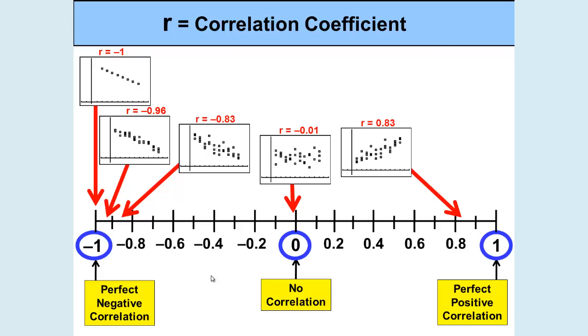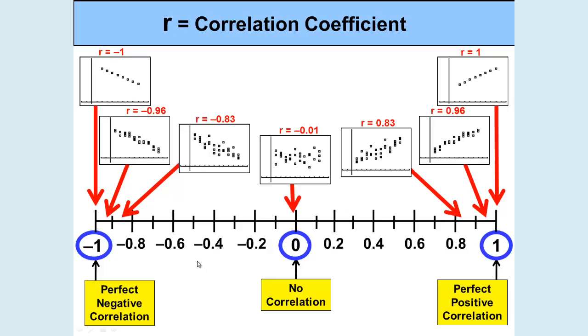As we approach the strong positive correlation, notice that R equals 0.83. And we move in a positive slope, and it's beginning to look more like a line. As R equals 0.96, it becomes even closer. And then at R equals 1, we're back to an exact perfect line.